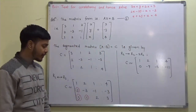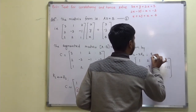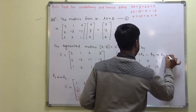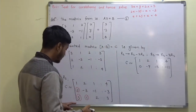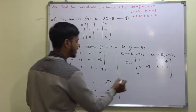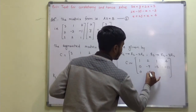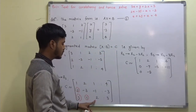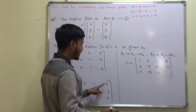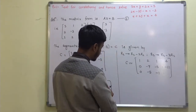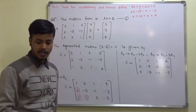Now we make the first entry of R3 zero by changing R3 to R3 - 3R1. So R3 - 3R1 gives: 3 - 3 = 0, then -1 - 6 = -5 (wait, 1 - 6 = -5... actually -1 - 3·2 = -7 + 2 = ...), and here it is 2 - 3 = -1, and 3 - 12 = -9. So we get the updated row 3 as 0, -5, -1 | -9.